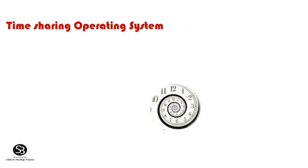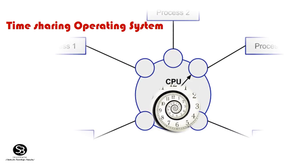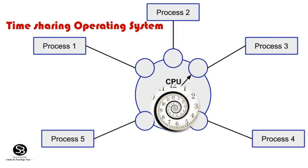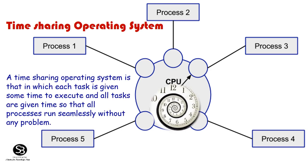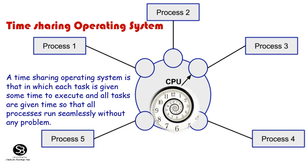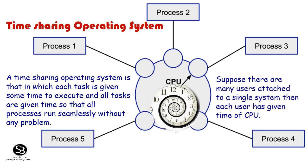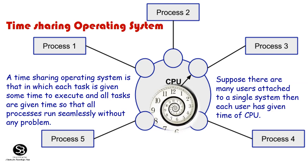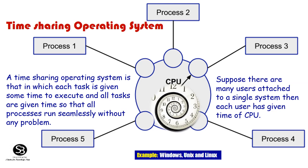Time-Sharing Operating Systems: A time-sharing OS is one in which each task is given some time to execute, and all tasks are given time simultaneously so that all processes run seamlessly without any problem. If many users are attached to a single system, each user is given a share of CPU time. Examples include Windows, UNIX, and Linux.